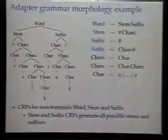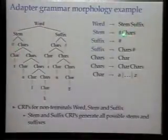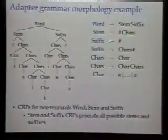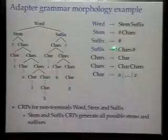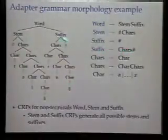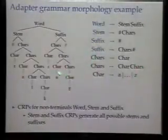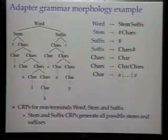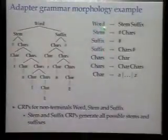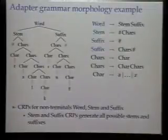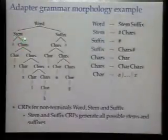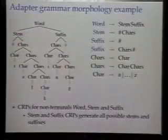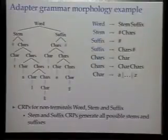You could write a PCFG for this, but it would analyze every word completely independently. Instead, we write an adapter grammar — running Chinese restaurant processes at the word, stem, and suffix levels. What that means is we'll learn a set of strings constituting the possible stems, the possible suffixes, and also the possible words.